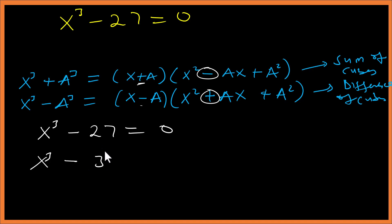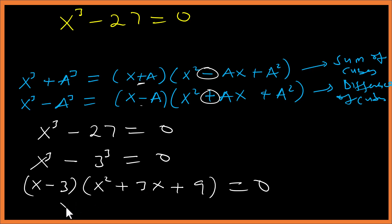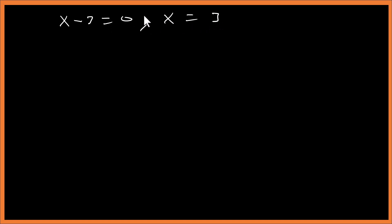So we write x cubed minus 27 using the difference of cubes. We have (x minus 3)(x squared plus 3x plus 9) equals to 0. The first solution from (x minus 3) equals to 0 gives us x equals to 3. Now we need to find the other two solutions.